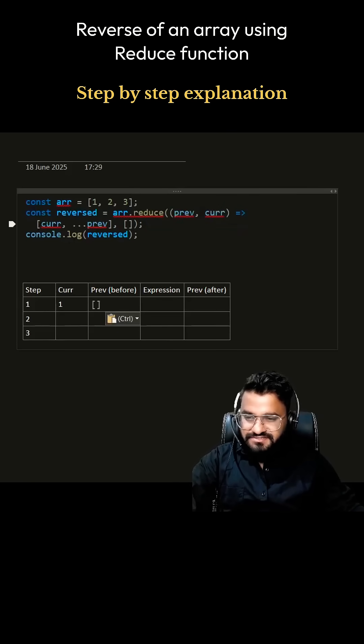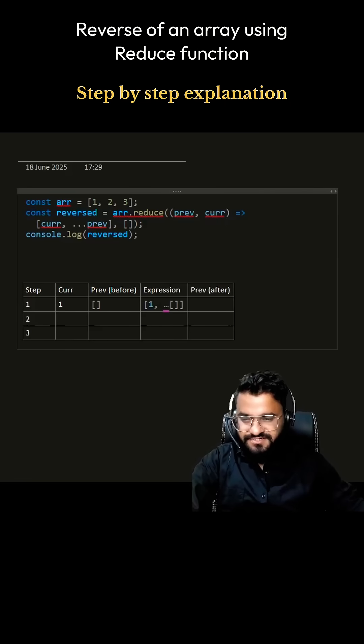Now expression is this, right? So the current value is 1 and what is the previous value? So previous value is empty array. Your previous value after expression gets evaluated will be this. Now for the second iteration, the current value will be 2.